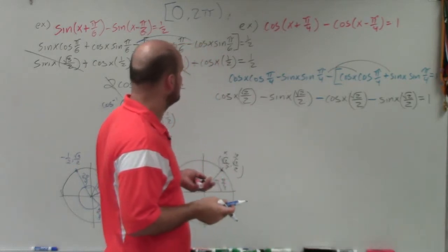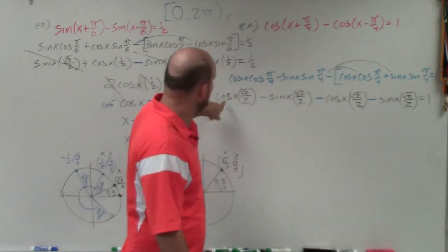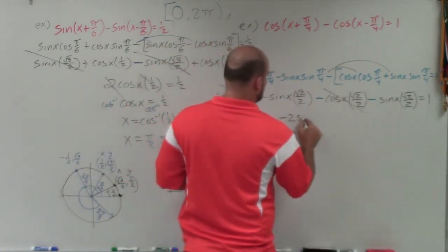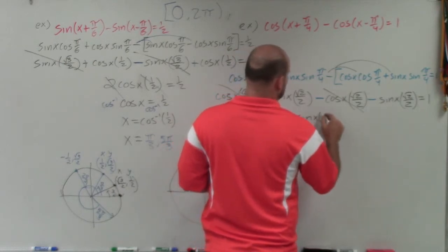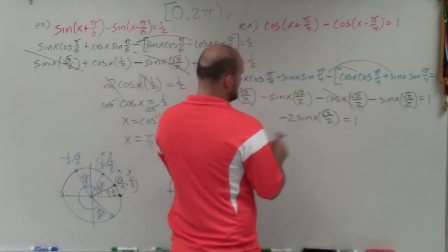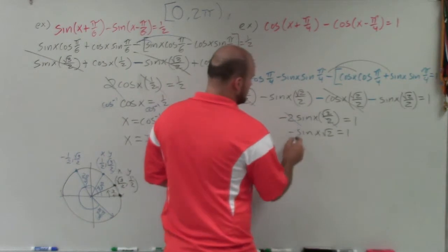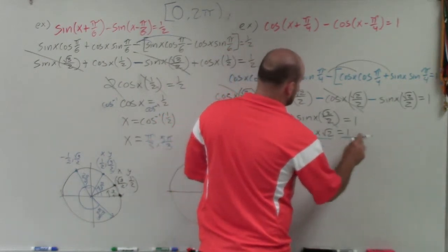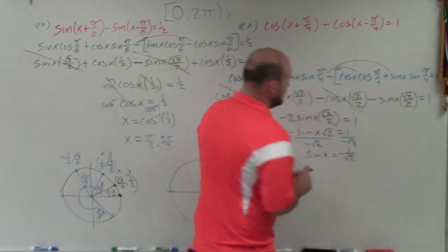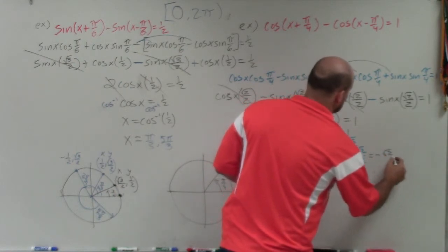Again, what you can see here is that the cosine of x terms — cosine of x times square root of 2 over 2 — are going to add to 0. So I have the two sine terms, which are the same: negative 2 sine of x times square root of 2 over 2 equals 1. The 2's divide out, leaving negative sine of x times square root of 2 equals 1. Dividing by negative square root of 2, I'm left with sine of x equals negative 1 over square root of 2. Rationalizing the denominator gives negative square root of 2 over 2.